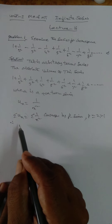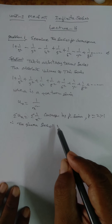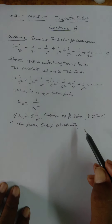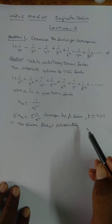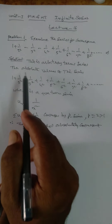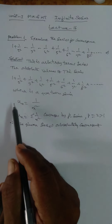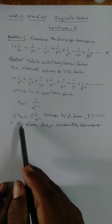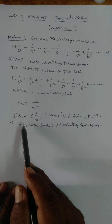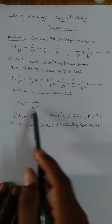Therefore, the given series is Absolutely Convergent. Note: if we write Σ|Uₙ|, we use mod Uₙ. Since an absolute term is present, we write Uₙ and ΣUₙ accordingly.